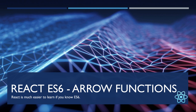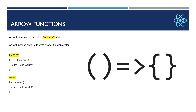React is much easier to learn if you know ES6. So what are arrow functions? Arrow functions are also called fat arrow functions, and they allow us to write shorter function syntax. Before ES6, we write the function using the function keyword with parentheses and curly braces. But now in ES6, we can write the function in a very shortened way — function name, equals, parenthesis, fat arrow, and then all statements.